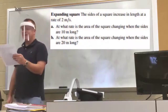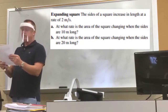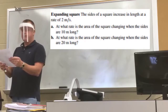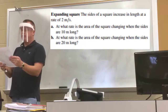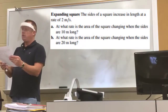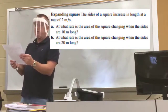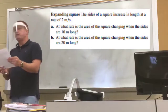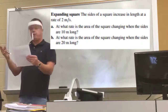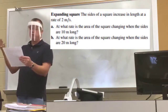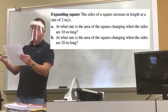The problem says the sides of a square increase in length at a rate of 2 meters per second. Part A: at what rate is the area of the square changing when the sides are 10 meters long? Part B: when the sides are 20 meters long? So first, from reading the problem, what formula do we need?